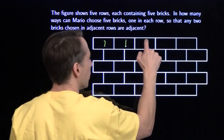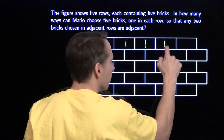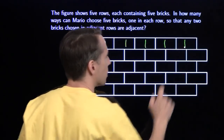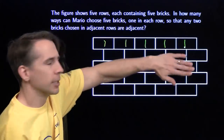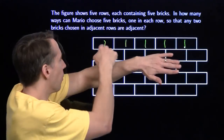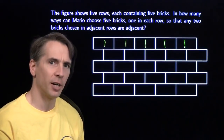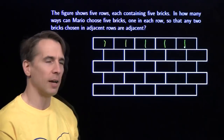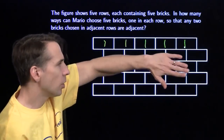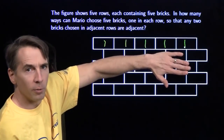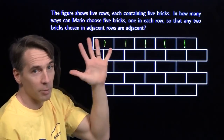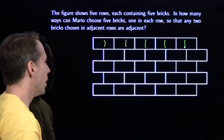He can only choose this one in one way, this one, this one, this one, and this one. That's all he can do. He's got one way to choose each of these bricks — not very interesting. He's got five choices. If we only had one row, we'd be done — we'd write down five.